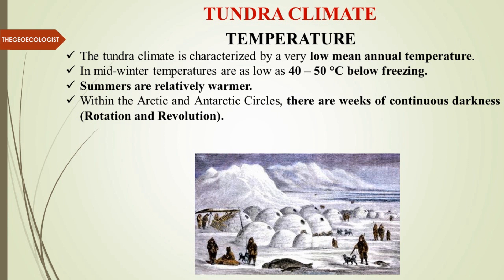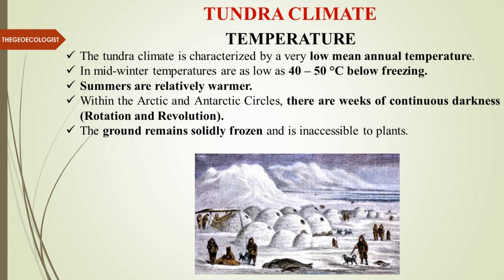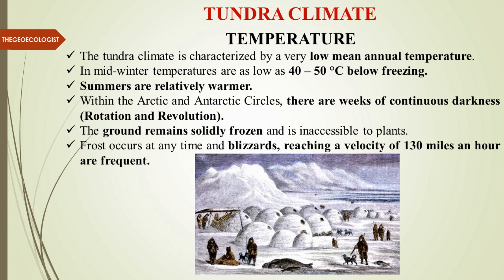Within the Arctic and Antarctic circles, there are weeks of continuous darkness due to the effects of Earth's rotation and revolution. The ground remains solidly frozen throughout and is completely inaccessible to plants — it is devoid of all plant life. Frost occurs at any time, and blizzards are a common phenomenon — strong winds with snow reaching a velocity of 130 miles per hour.